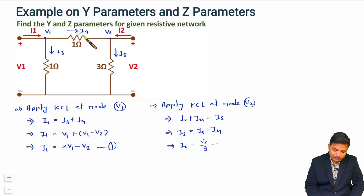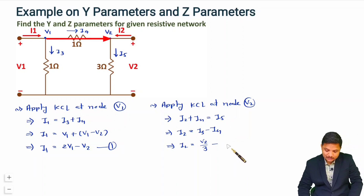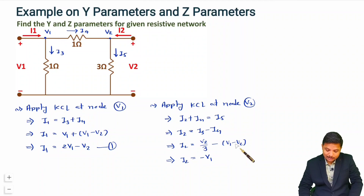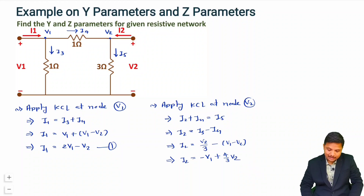Now, i4 = (V1 - V2) / 1 = V1 - V2. Substituting into the expression for i2: i2 = V2/3 - (V1 - V2) = -V1 + V2 + V2/3 = -V1 + (4/3)V2. So now we have two equations and can compare them with the standard Y parameter equations.